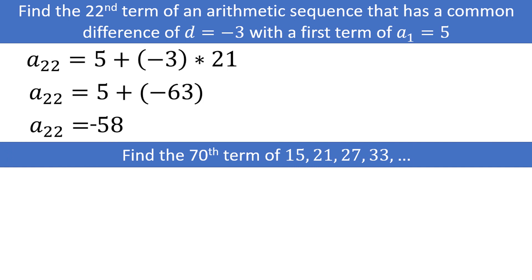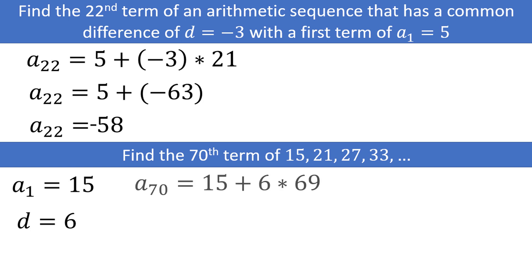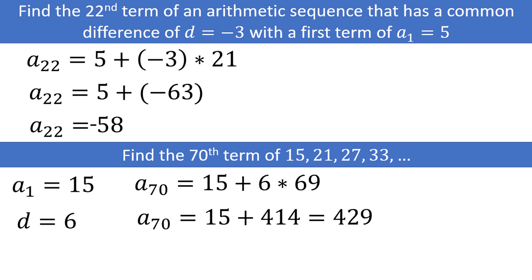Here is another similar problem. We want the 70th term. We see that the first term is 15, and the common difference is 6. If we want the 70th term, we have to add the common difference 69 times. We have 15 plus 6 times 69. 6 times 69 is 414, so we have 15 plus 414, which is equal to 429.